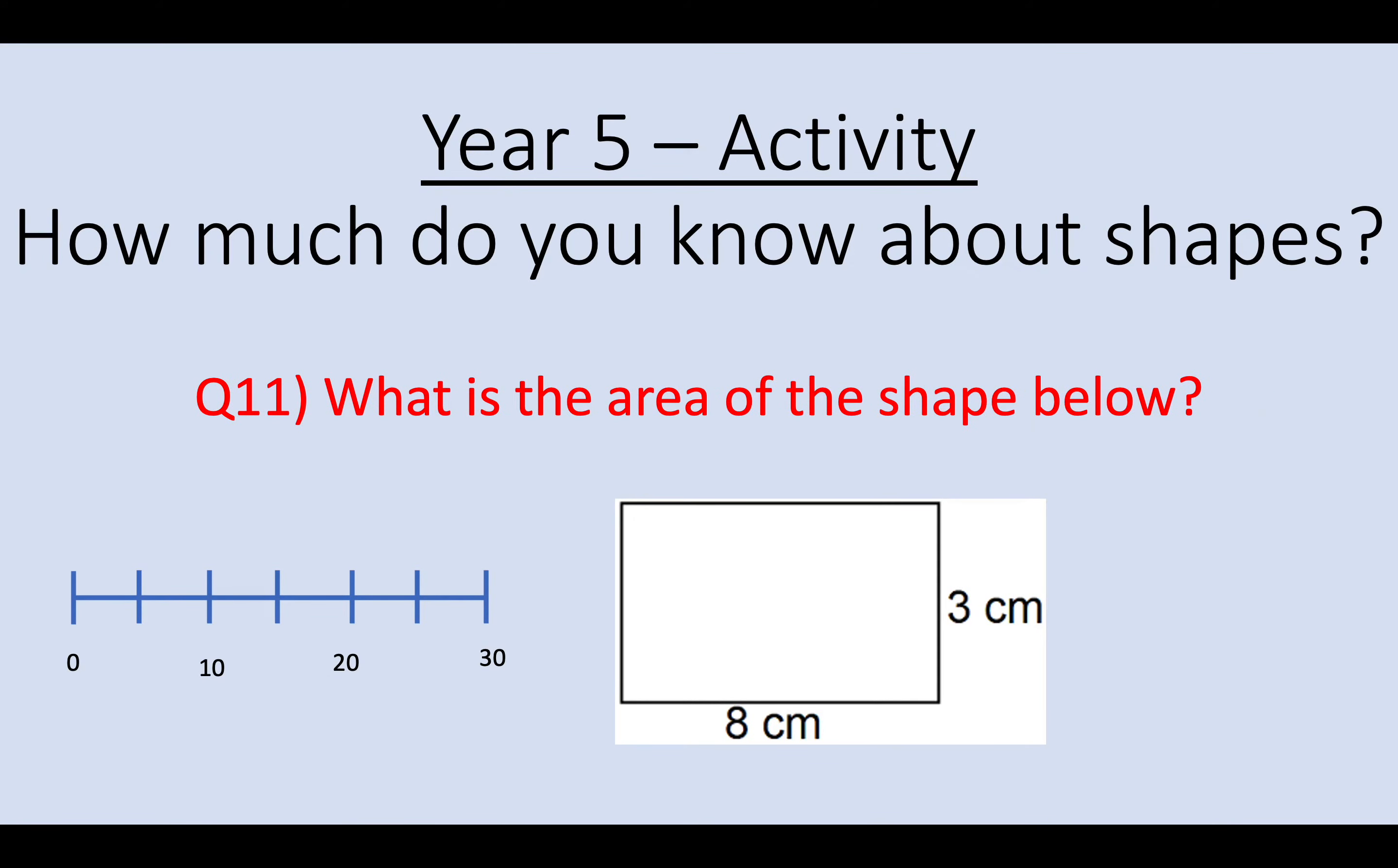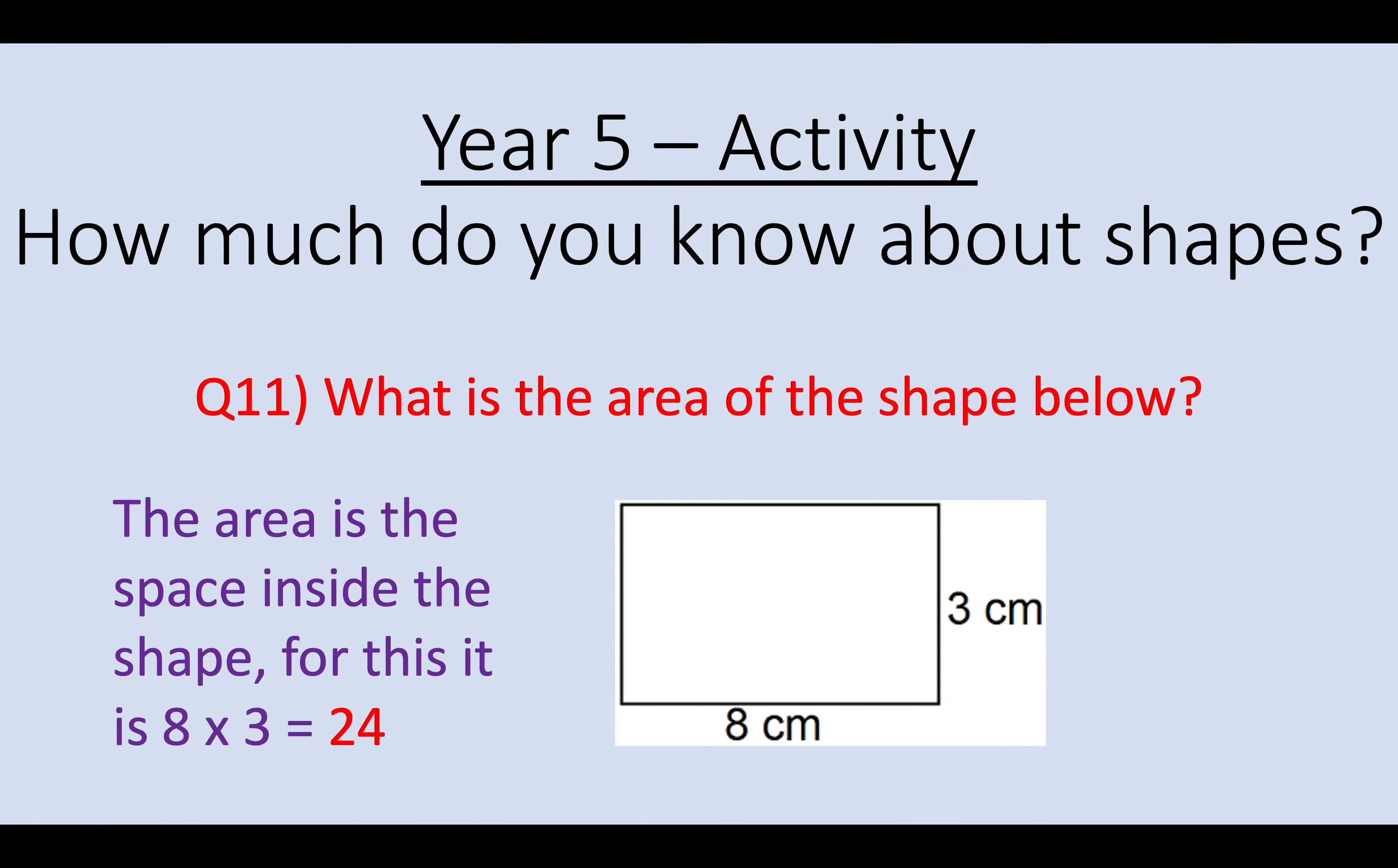Question 11. What is the area of the shape below? Okay. The area of the shape is the space inside it or the space inside the perimeter. So this is a rectangle. And what you do to find the area of any rectangle is to multiply how long it is by how tall it is. So 3 times 8 or 8 times 3 means that this shape has an area of 24. So your answer for question 11 is 24.